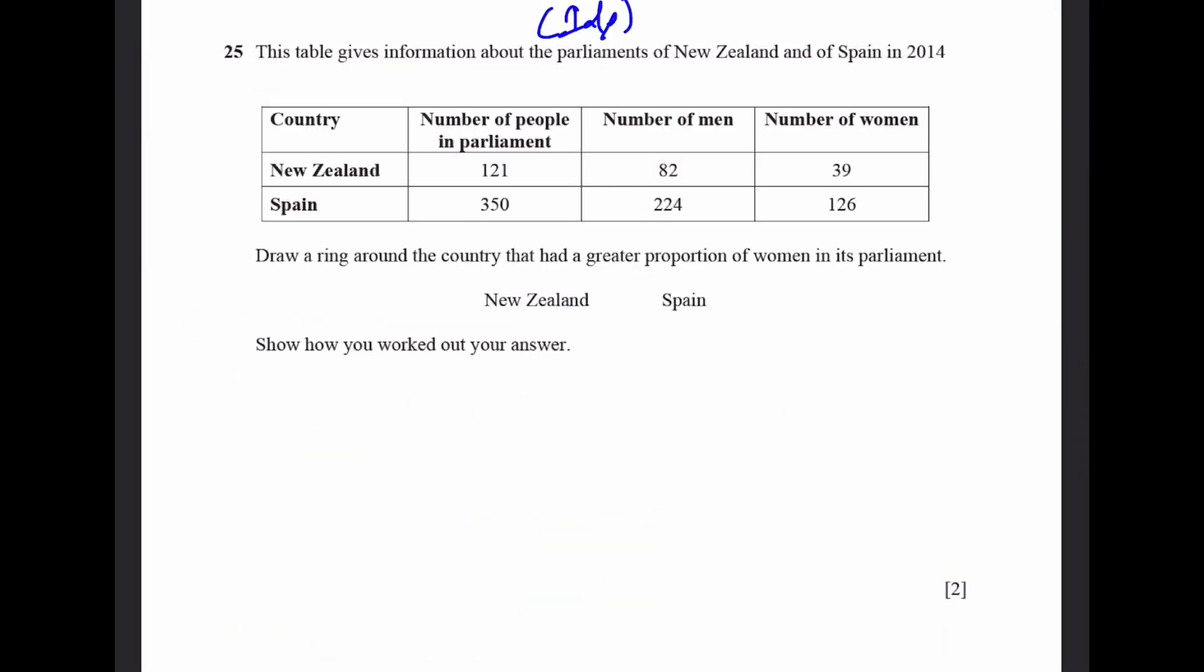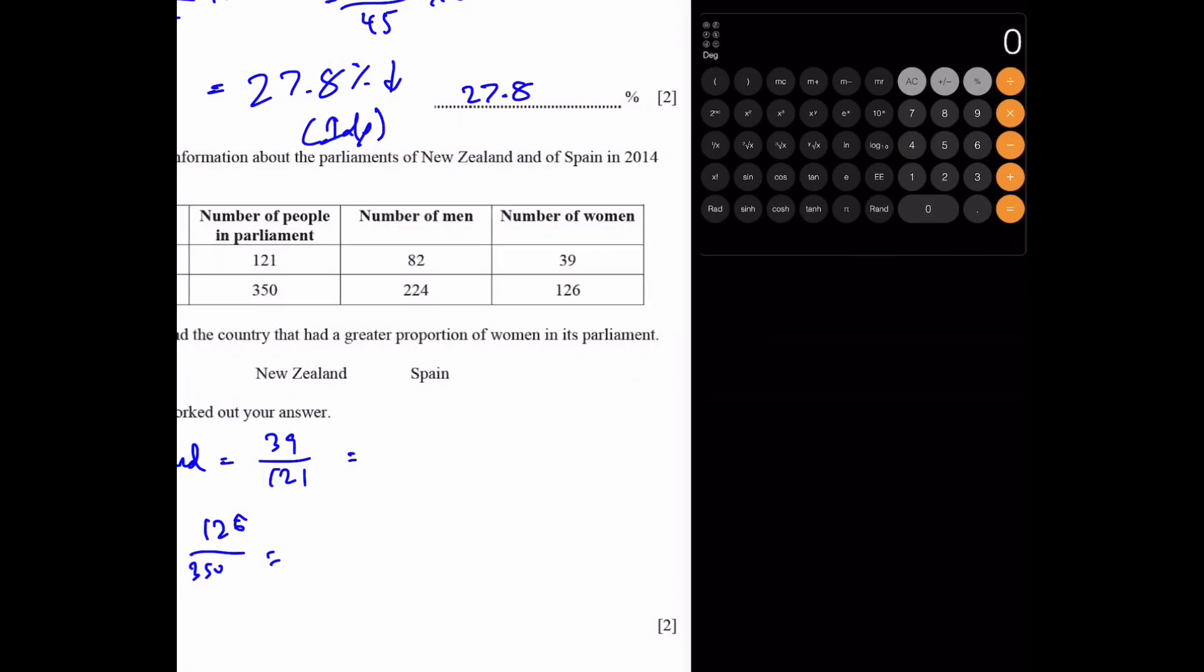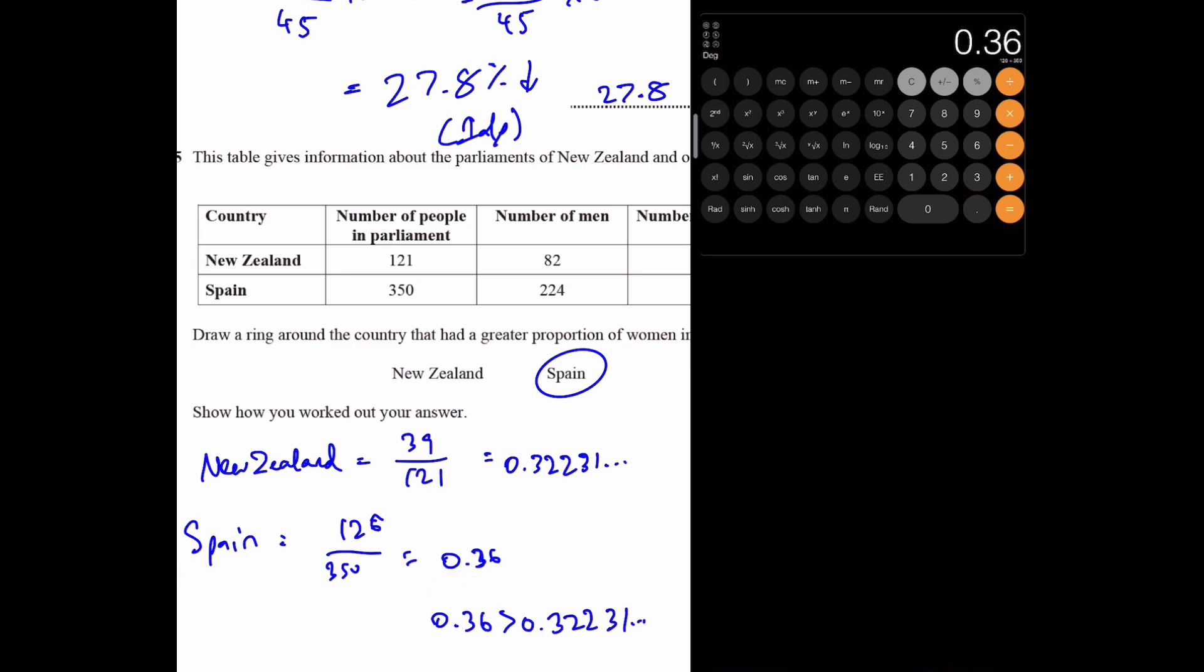Question 25. The table gives information about the parliaments of New Zealand and of Spain in 2014. Ring around the country that has a greater proportion of women in its parliament. In New Zealand, the proportion is 39 by 121. And in Spain, it is 126 by 350. We can do this in decimal now. 39 divided by 121, which equals 0.32231. And 126 divided by 350. That'll be 0.36, which is greater. So that means Spain had a greater proportion of women.